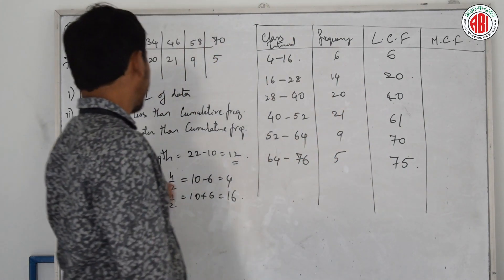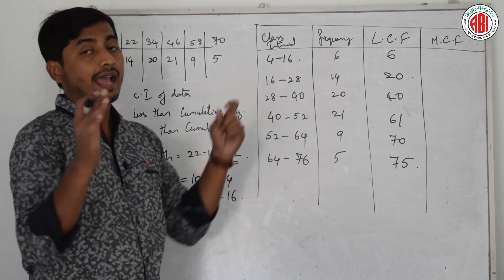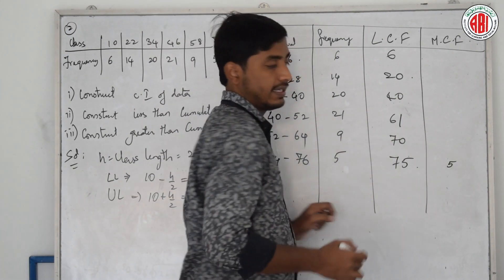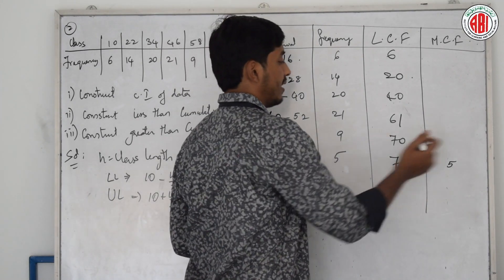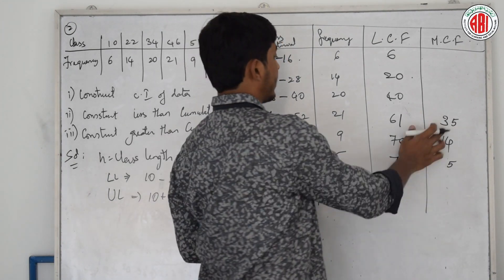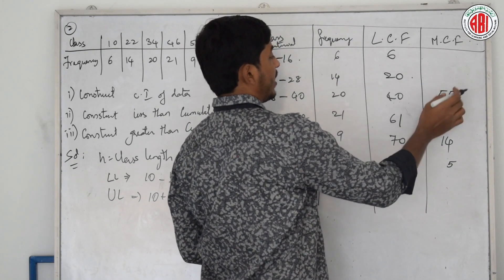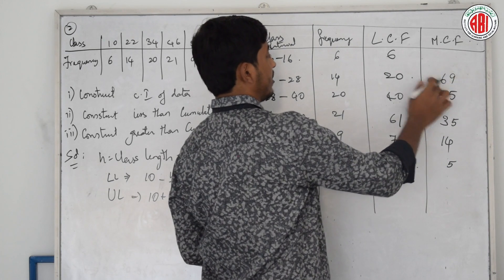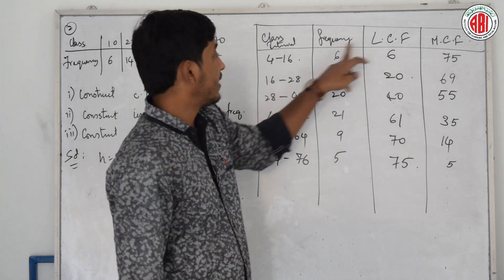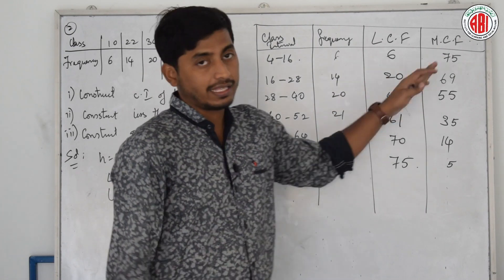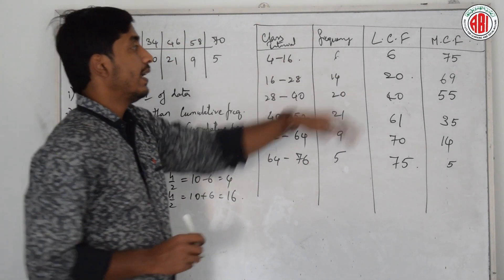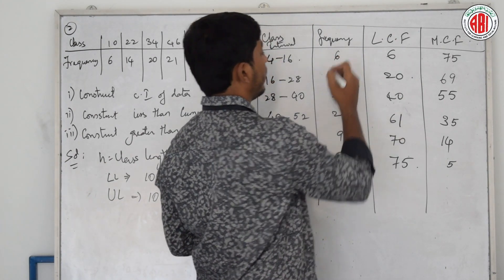Next is greater than cumulative frequency. For this, start from the bottom. Write 5 as it is. Then 5 plus 9 is 14. Then 14 plus 21 is 35. Then 35 plus 20 is 55. Then 55 plus 14 is 69. And finally 69 plus 6 is 75. Alternatively, you can write 75 at the top and subtract each frequency going down.